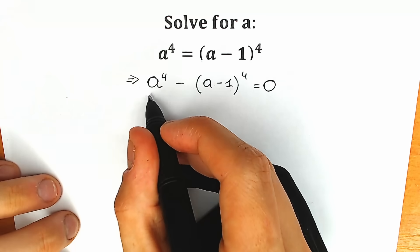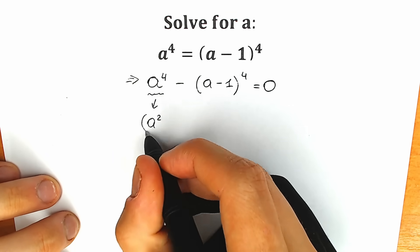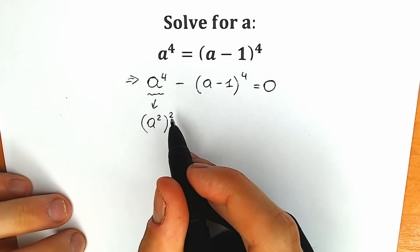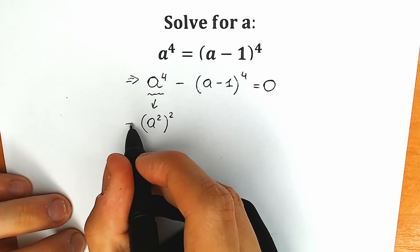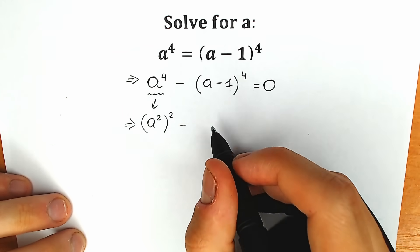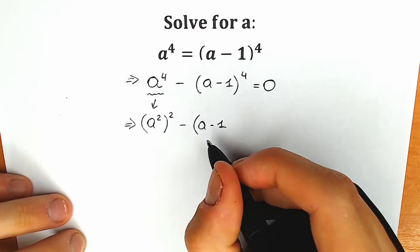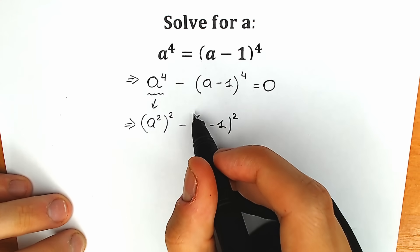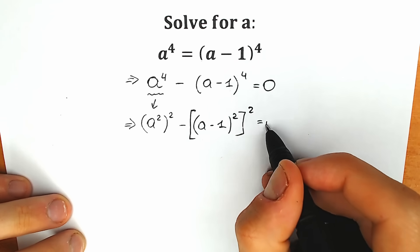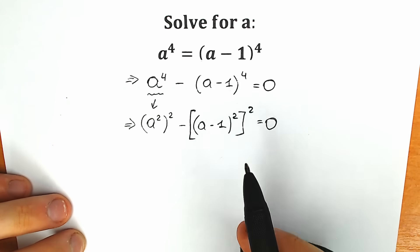Second step: instead of a to the fourth power we can write (a²)² — raised to the second power. According to the basic power rule, multiplying the exponents gives us the same a to the fourth power. Similarly, we can write (a minus one) to the fourth as ((a-1)²)², all raised to the second power, equal to zero.